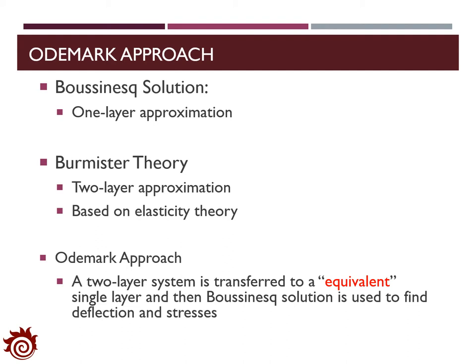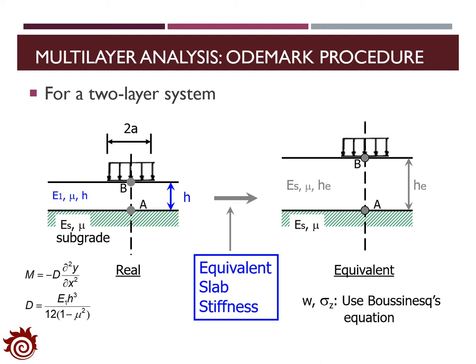In this approach, we will first convert a two-layer system to an equivalent single-layer system, and then the Boussinesq solution is applied to find out the deflection and the stress applied to that layer. The Odemark procedure can be applied for a two-layer system and converted to an equivalent single-layer system. The figure on the left shows one example of a two-layer system where the modulus of elasticity for the subgrade is set as ES. For the upper layer, we have the elastic modulus as E1 and thickness as H. We also assume that the Poisson's ratio for both layers are the same. We will convert the upper layer to an equivalent layer with the same elastic modulus as the subgrade.